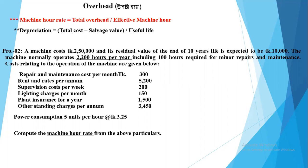The machine normally operates 22 hours per year, including extra time required for minor repair and maintenance. If we take the total cost and divide it by the effective machine hours, we get the effective machine hour rate. If the cost is given over the cost per machine hour, we can compute the machine hour rate from the above particulars.